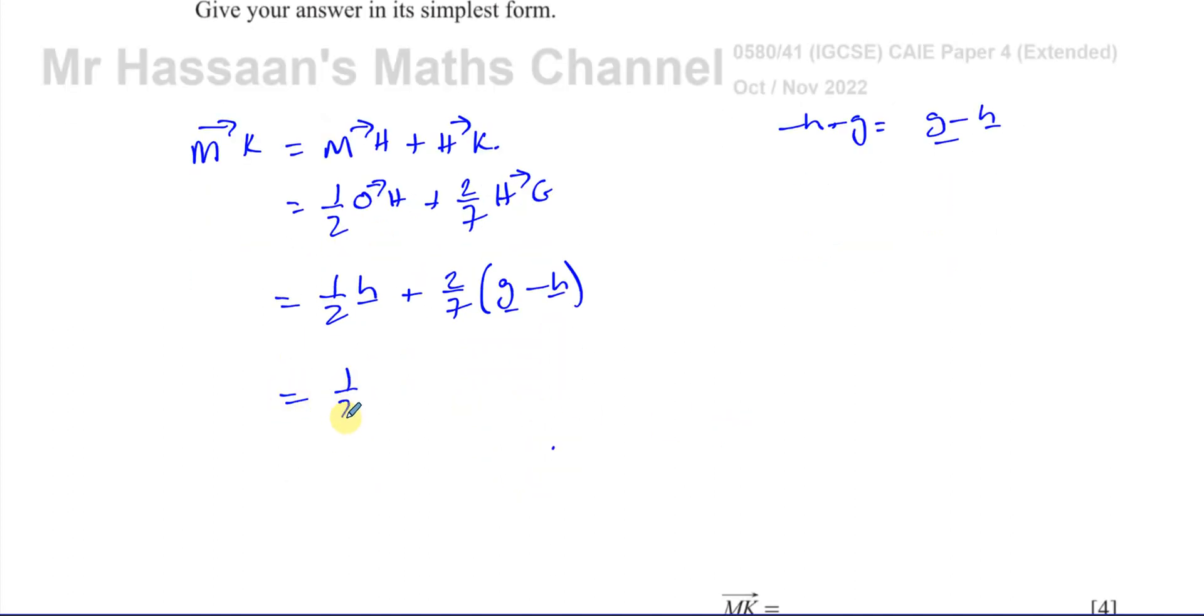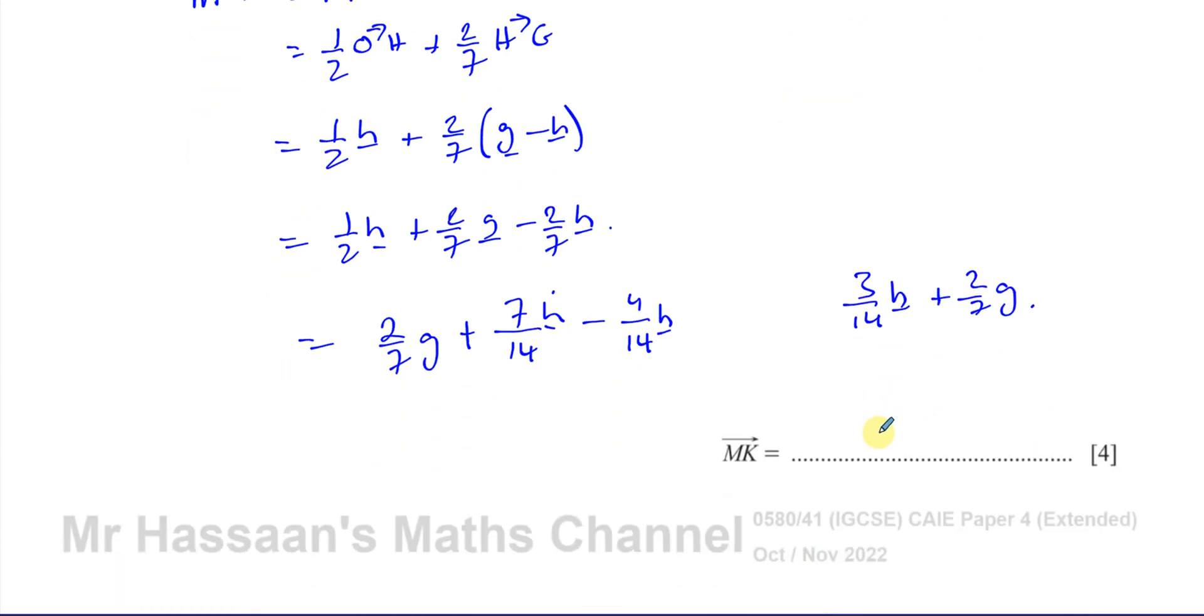So that now should give me my answer. So you have here a half of h. I have to just simplify it basically. So expand this bracket. It becomes two sevenths of g minus two sevenths of h. This will give me two sevenths of g. And I have a half of h minus two sevenths of h. Now that's going to give me, make them the same denominator. So a half is like seven over 14 h minus four over 14 h. So I end up with three over 14 h plus two over seven g.